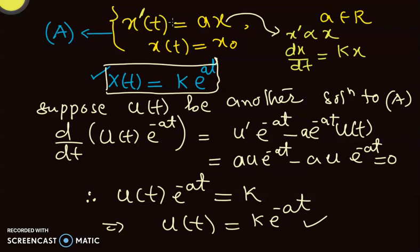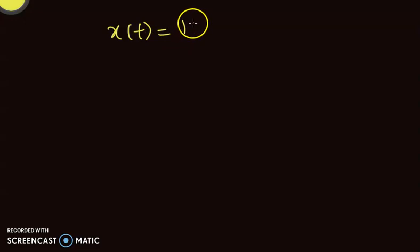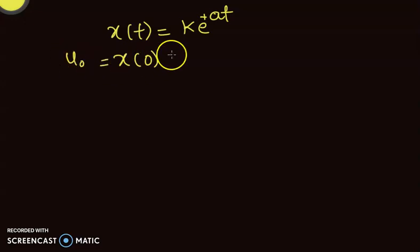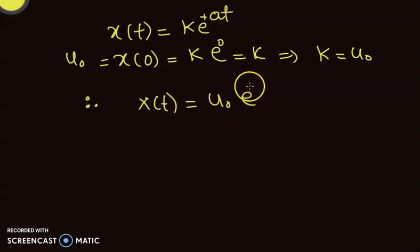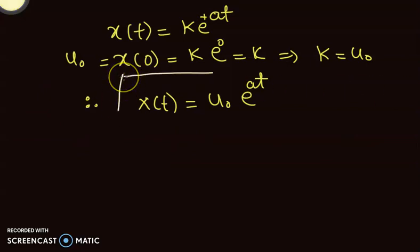Using the initial condition x of 0 equals x-naught, we can show further that x of t equals k e to the at, and substituting gives k equals x-naught. So the solution is x of t equals x-naught e to the power at.